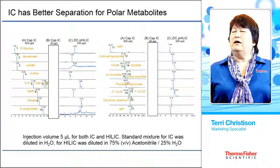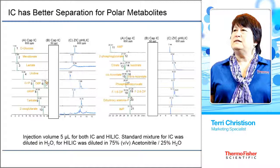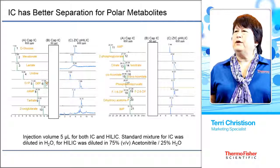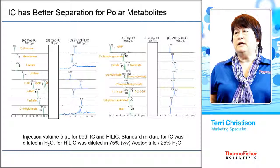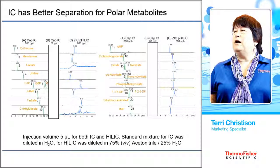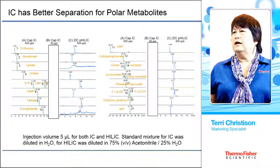IC again demonstrates better separation for polar metabolites. Here we compare cap IC and HILIC — cap IC in the green and HILIC in the blue. About halfway down the first column we have glucose 1-phosphate, glucose 6-phosphate, and fructose 6-phosphate — three peaks — whereas right next to it the HILIC method shows one peak with a couple of knobs on it. Also, we have cis-aconitate and trans-aconitate, which are commonly separated easily by ion chromatography, but with the HILIC method they're only able to identify one of the isomers. This is what we expect from ion chromatography, and we want to bring that technology to metabolomics.